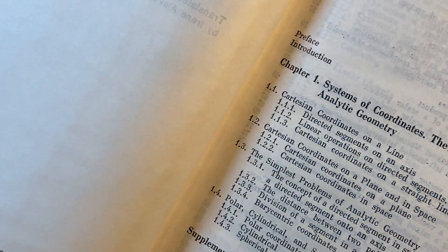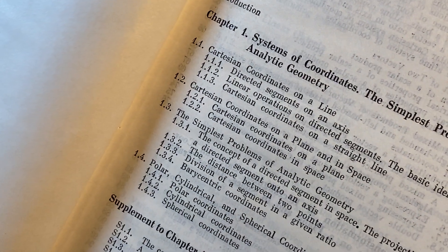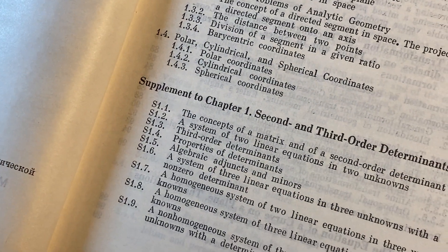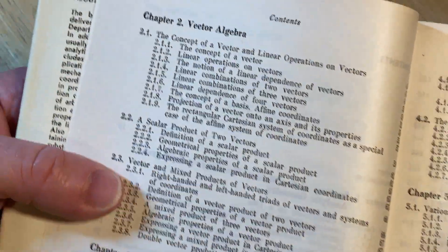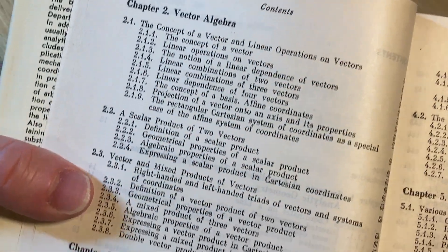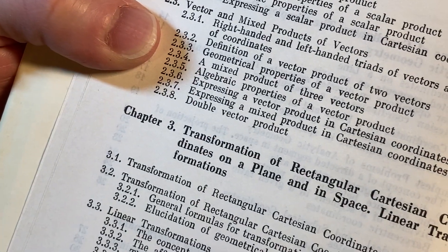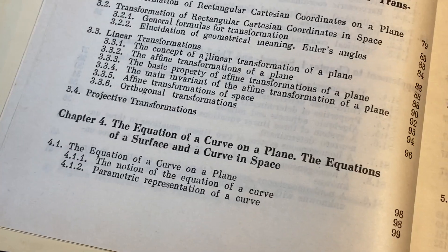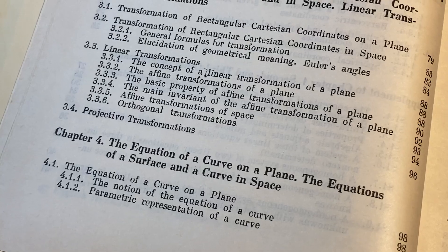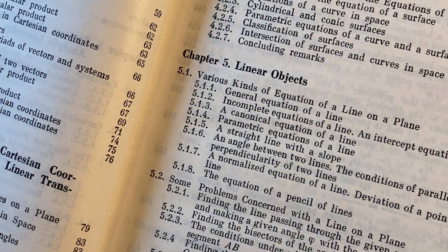Systems of coordinates, the simplest problems of analytic geometry — that's where it starts. Then we have second- and third-order determinants, vector algebra, transformation of rectangular Cartesian coordinates on a plane and in space, linear transformations, the equation of a curve on a plane, the equations of a surface and a curve in space, linear objects.